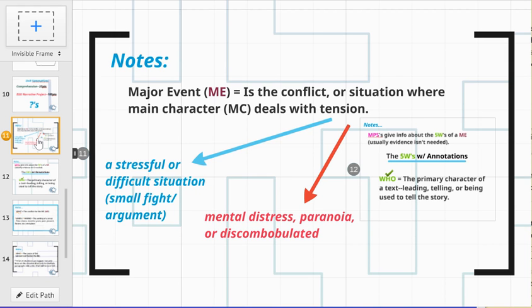Sometimes you have tension that is mental, so mental distress. Maybe they're paranoid, maybe they're all over the place, discombobulated. Those are other moments in text where writers may show that a character is going through something that's really taking a hold on everything else: their actions, their attitude, their feelings or thoughts on moving forward in that text.